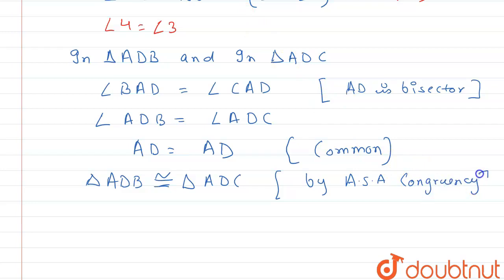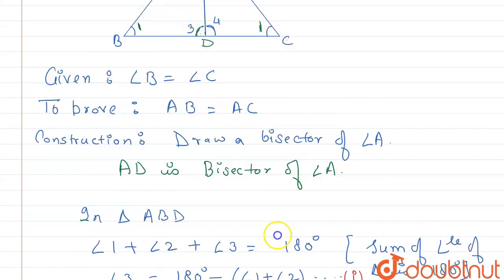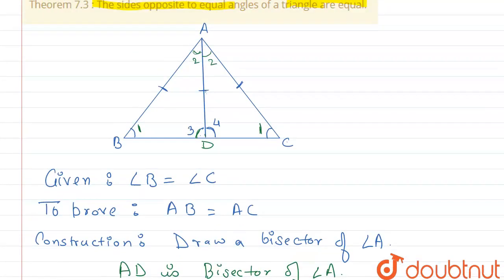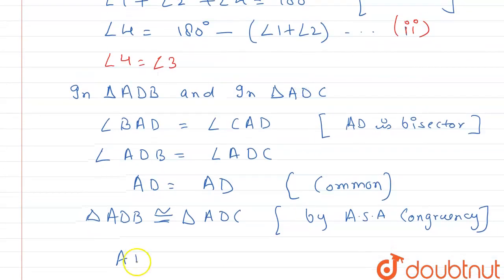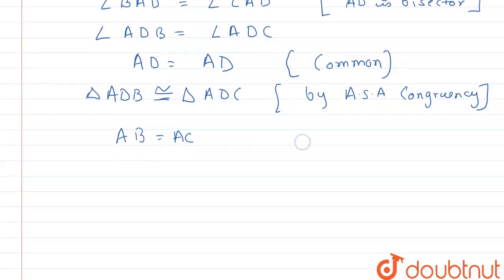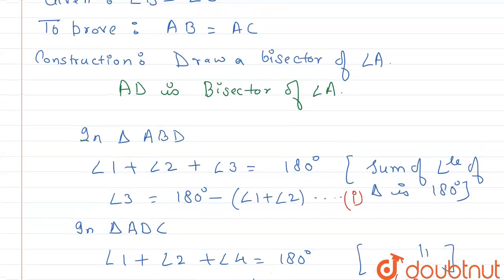Since the two triangles are congruent, we conclude that AB is equal to AC. Hence it is proved that the sides opposite to equal angles of a triangle are equal. I hope you understand. Thank you.